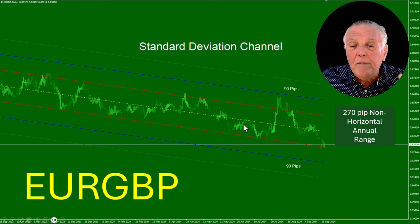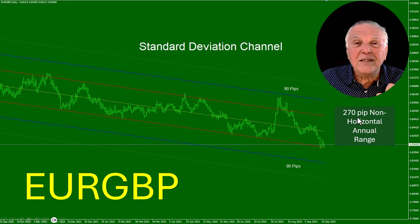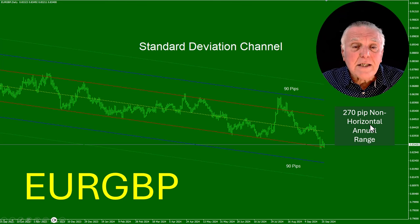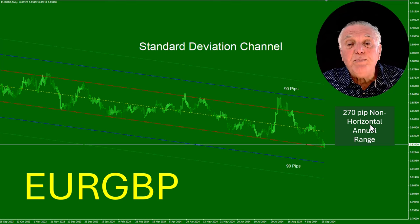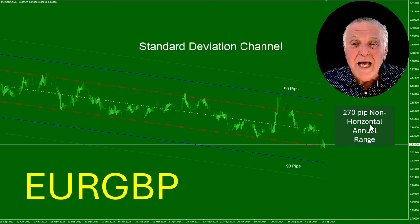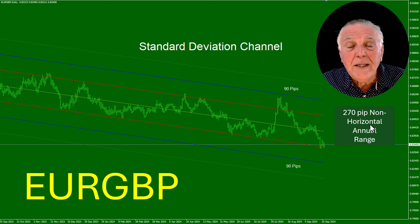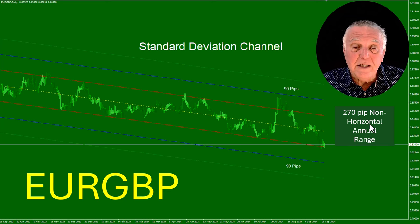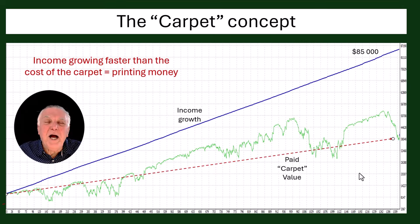The standard deviation channel creates an average for the year and shows how much it deviates from that average. The Euro/Pound's range was 270 pips — by contrast the Pound/Yen has traveled 2,700 pips in a year, which is 10 times more dangerous. That's why we selected the Euro/Pound. Lot sizing depends on the size of your account; I'll cover gap sizing and lot sizing in future videos.